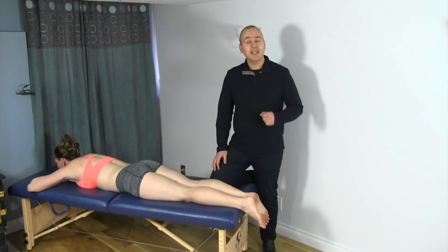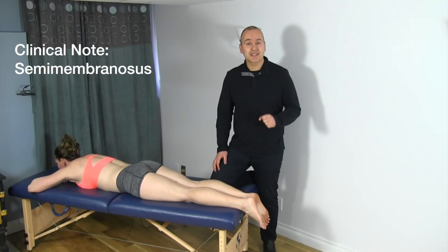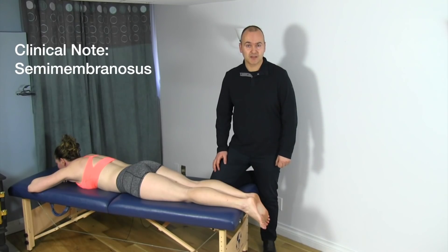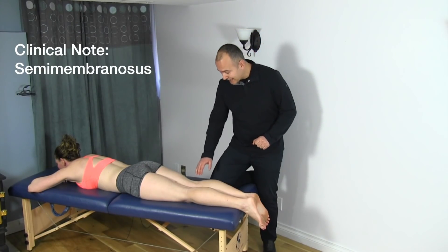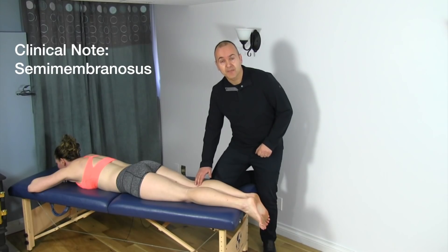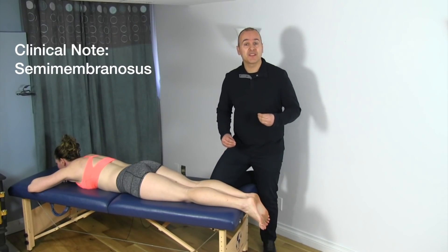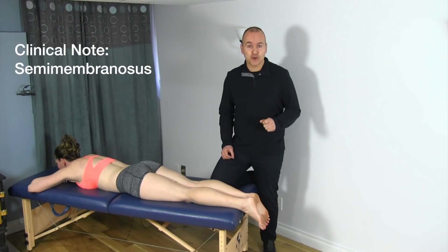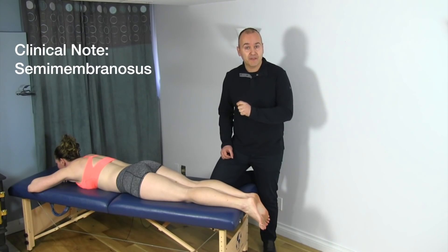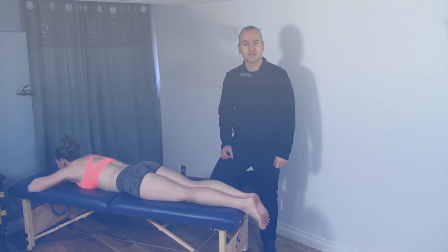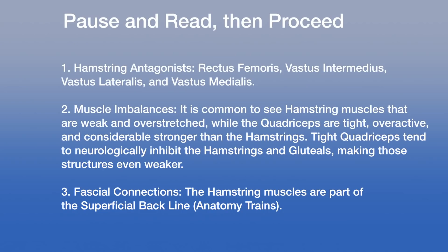A clinical note about the semimembranosus: it attaches right into the medial meniscus of the knee and helps facilitate movement of that meniscus during knee flexion. It helps to prevent impingement of the medial meniscus between the femur and the tibia.